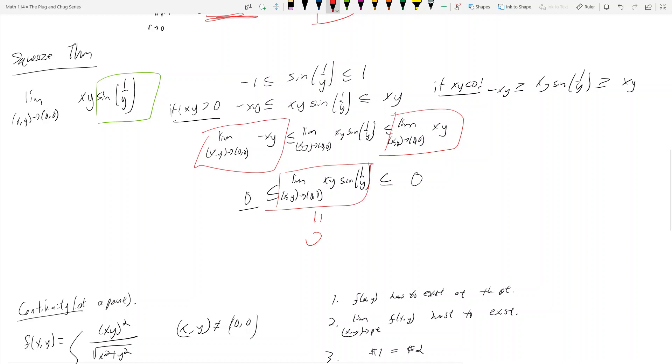And likewise, for xy being less than 0, this inequality works out the exact same way. If you take the limit of everything, you get that the limit of this middle as x,y approaches 0,0, that limit is equal to 0 as well.